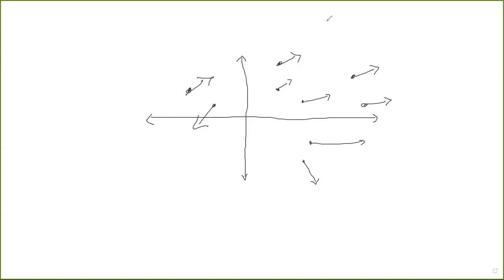Now, if vector fields didn't come up anywhere, this would be a weird thing to think about. So let's look at some examples of where vector fields might come up.